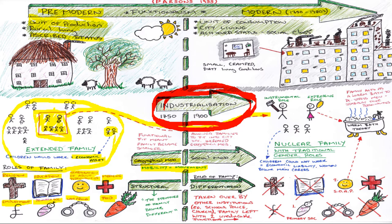This also fits with Parsons' concept of functional fit. The family became smaller so it could fit into industrialised society — coming from large families in large rural countryside houses to small urbanised living. You were not going to get an entire extended family into one small space, so the family became smaller and that created the mobility to move to the city.